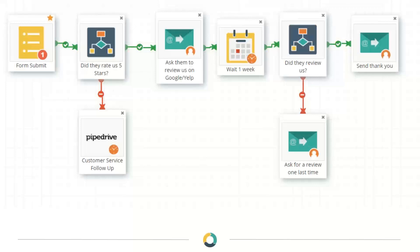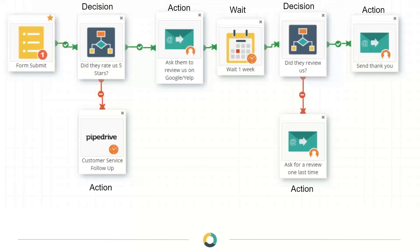ActiveDemand isn't an omnipresent overlord of the internet — I can't tell if they reviewed us on Yelp, but I can tell if they clicked on the link to review us. Based on that click, if they didn't click, I could ask for a review one more time. If they did click, I could send them a thank-you note. So we've got decisions, actions, and wait states — giving customers the time they need. This is a quick example of what you can do.